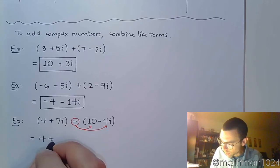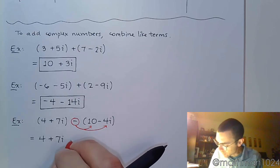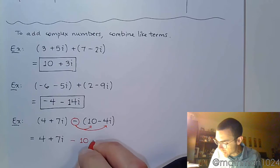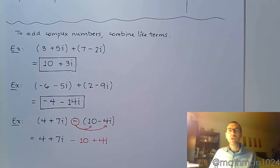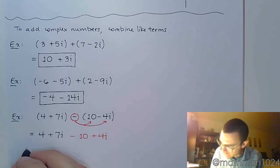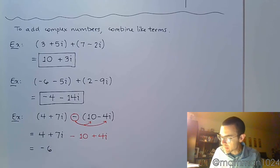So we just have 4 plus 7i here. Distribute this negative, so it gives me negative 10. Negative times negative 4i is positive 4i. So now that we don't have that subtraction problem anymore, it's just a matter of combining like terms problems. So combine the real parts, 4 minus 10 is negative 6. Positive 7i, positive 4i is a positive 11i.